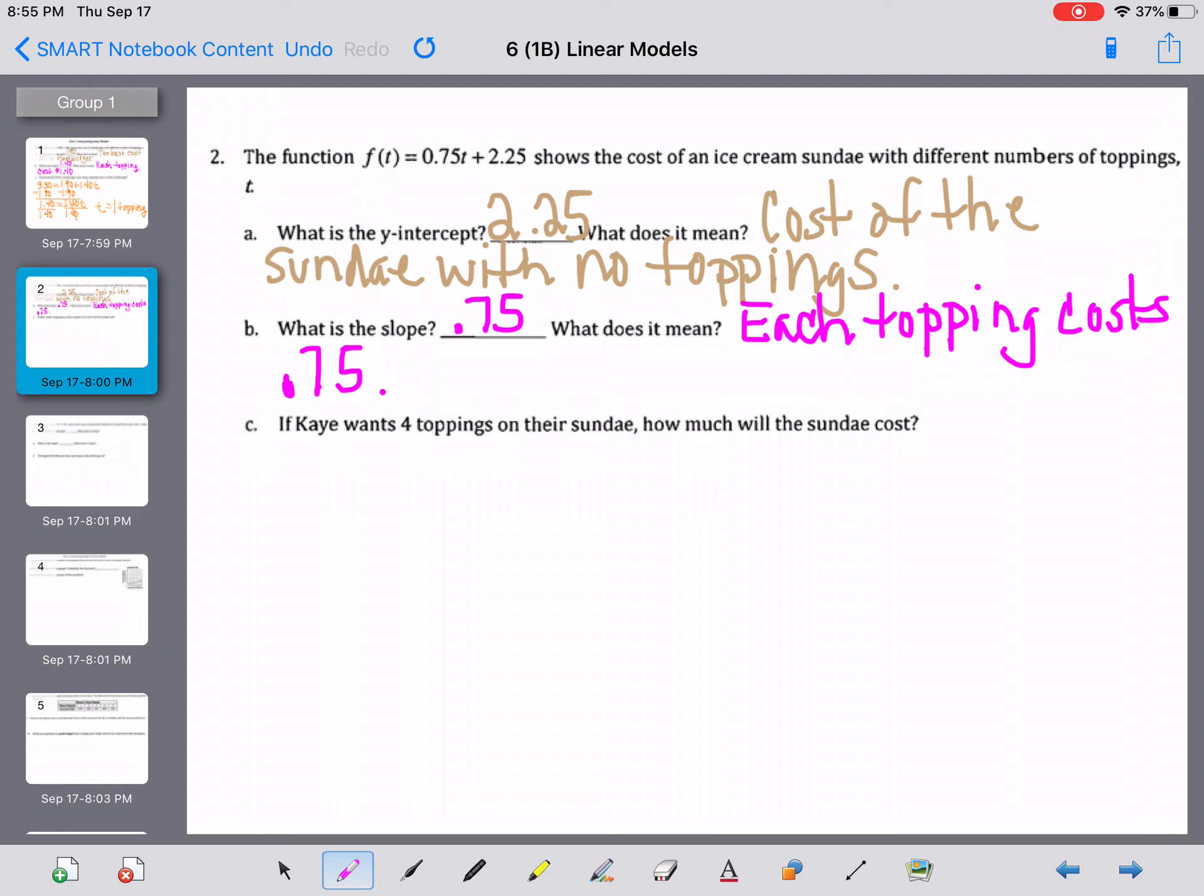And then it says, if K wants four toppings on her sundae, how much will the sundae cost? Once again, we need to solve that. But this time what we know is, she wants four toppings. So that means that t = 4, and we're going to put that value of four back into our equation. So we're going to do 0.75 times the four. There's the toppings. That's what t stands for. Plus 2.25.